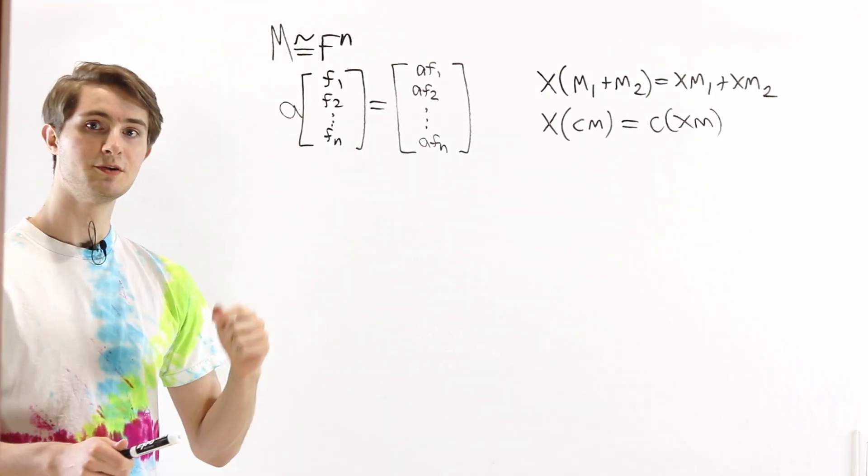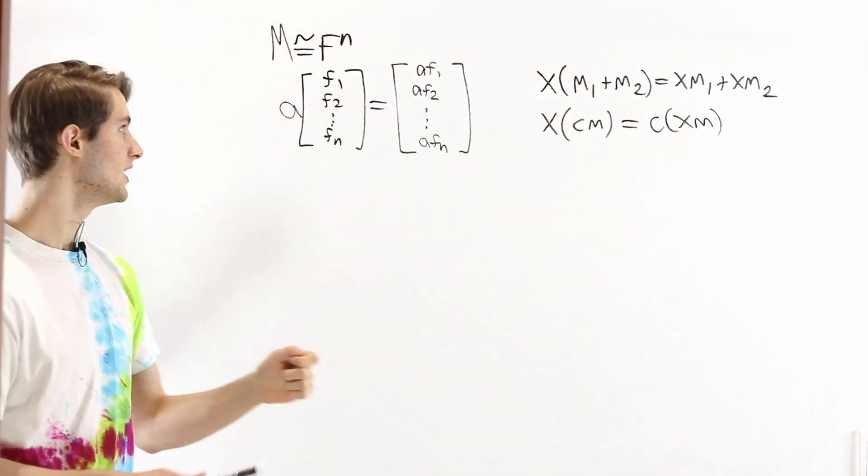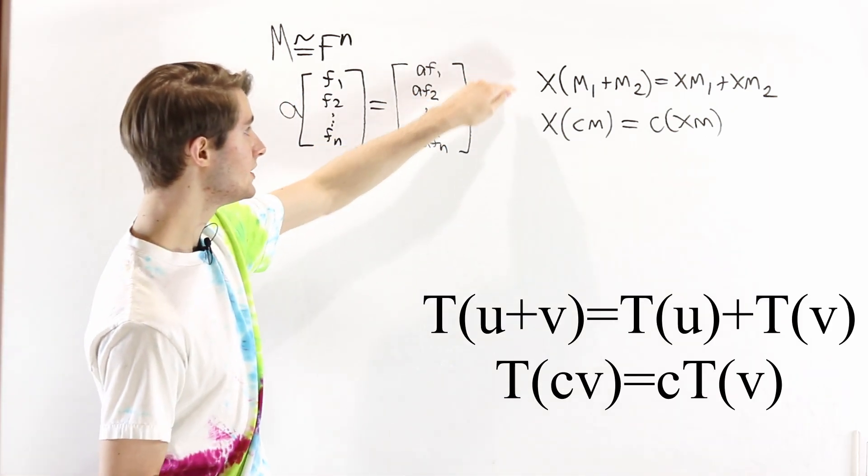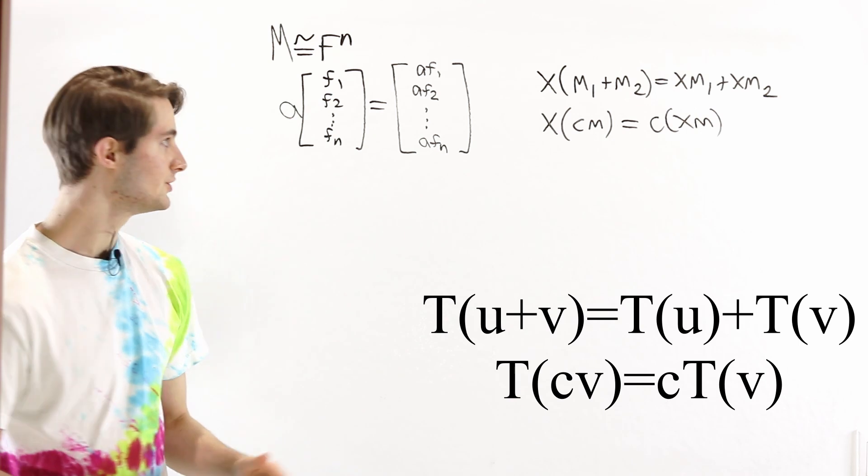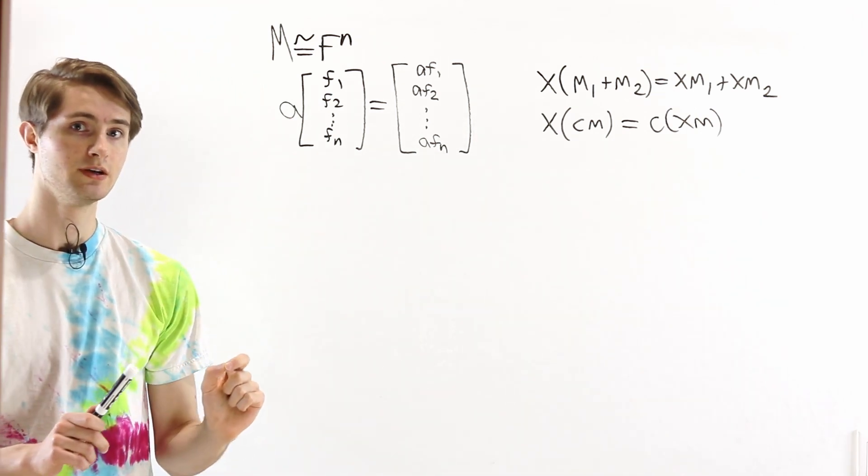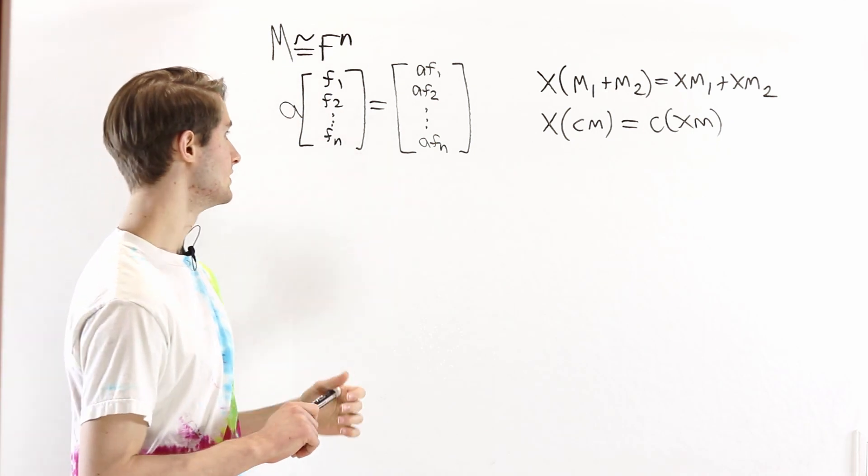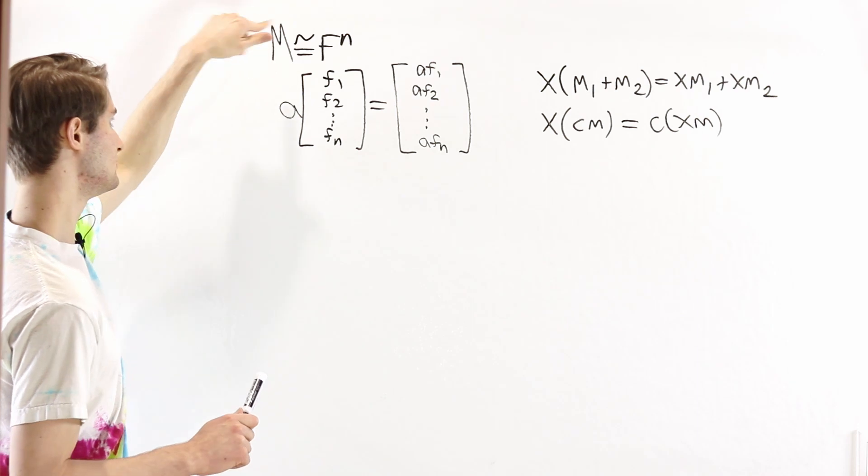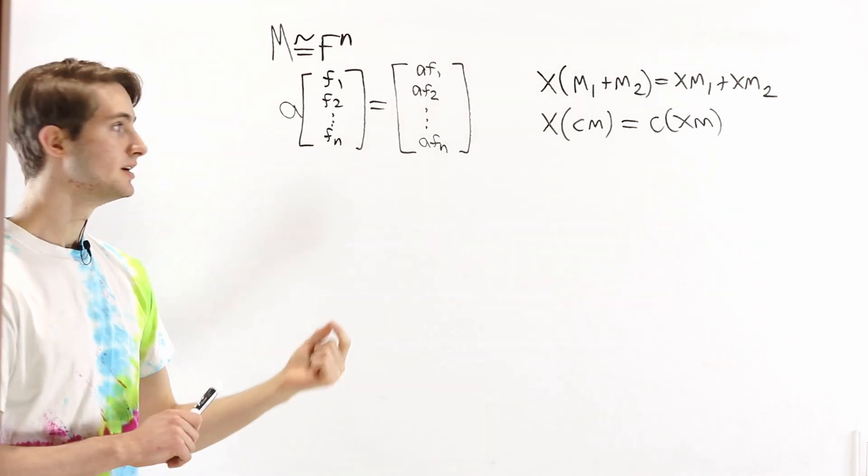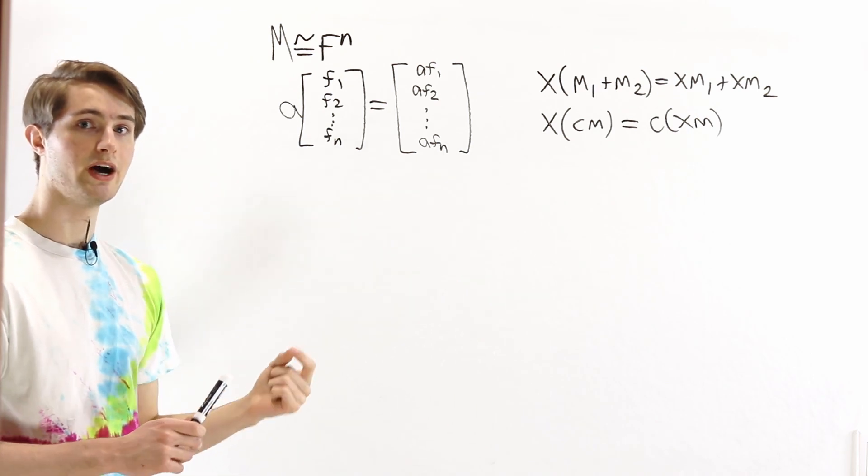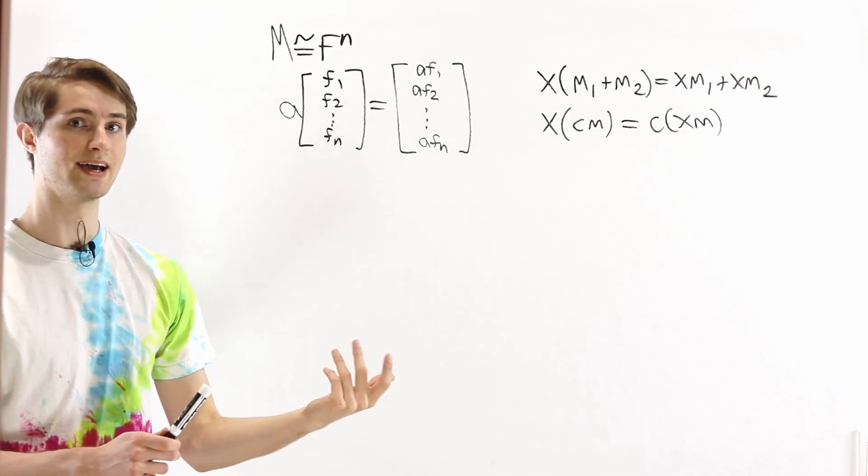Now if we think about multiplication by x as a function from the module M to itself, these two conditions are exactly the conditions for x to be a linear transformation. So what we've learned here is that an FX module is an F module or vector space M and a linear transformation from M to M that describes multiplication by x.